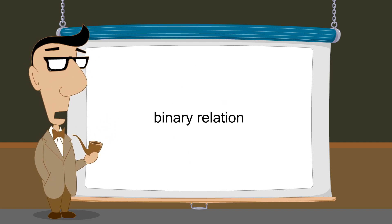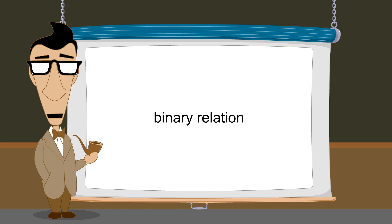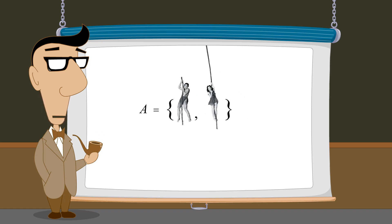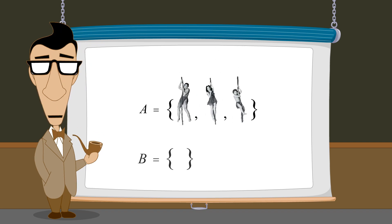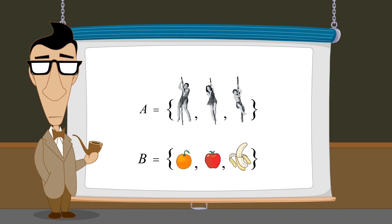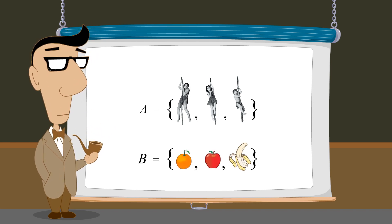A binary relation relates various elements of one set to elements of another set. For example, let's say that set A contains Tarzan, Jane, and Boy, and set B contains oranges, apples, and bananas. Now, how might the elements of these two sets be related?